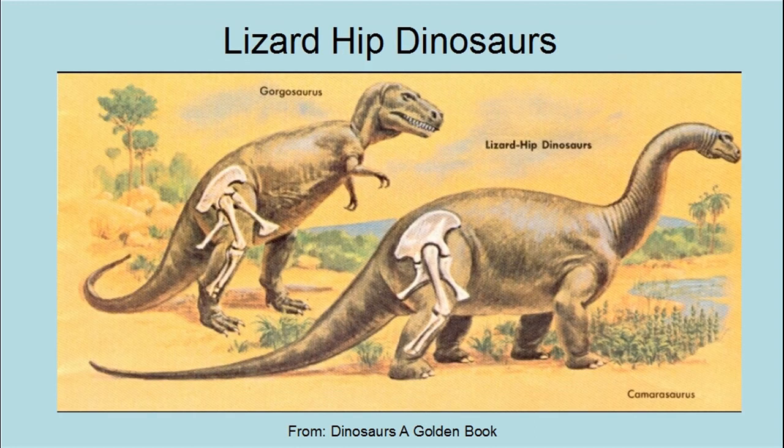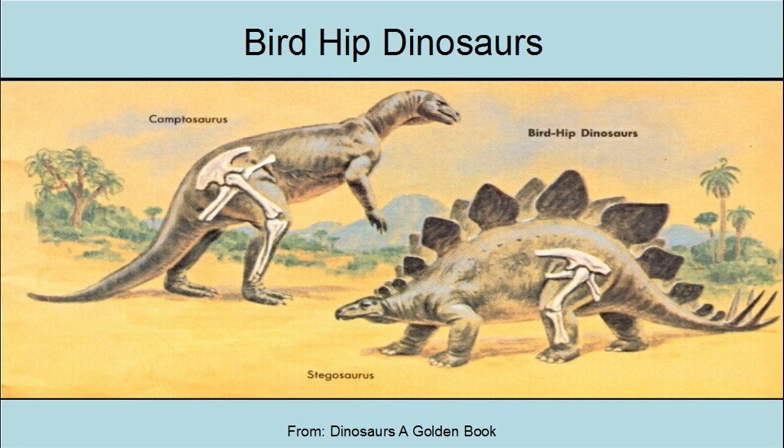Dinosaurs have two basic types of hips. The first type are lizard hip dinosaurs. The second type are called bird hip dinosaurs. Ironically, birds are alleged to have evolved from the lizard hip dinosaurs and not the bird hip.